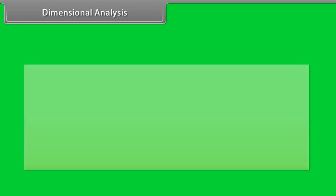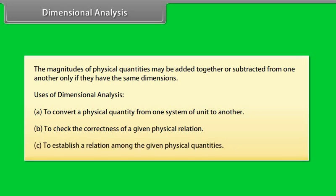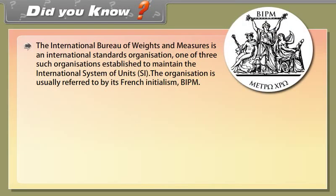Dimensional analysis: The magnitudes of physical quantities may be added together or subtracted from one another only if they have the same dimensions. Uses of dimensional analysis: (A) To convert a physical quantity from one system of unit to another, (B) To check the correctness of a given physical relation, (C) To establish a relation among the given physical quantities.